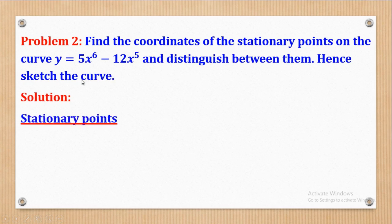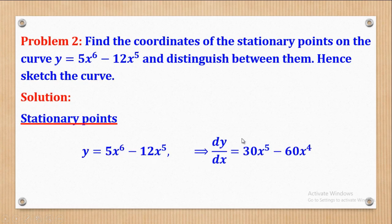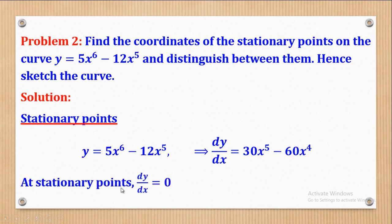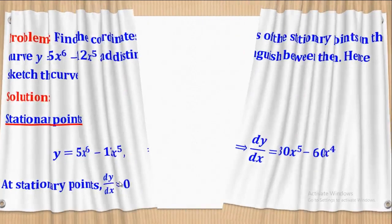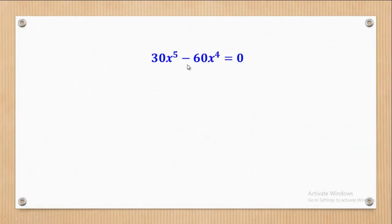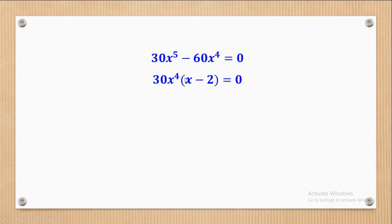We start with the stationary points. To find them, get the first derivative first. Differentiating 5x⁶ gives 30x⁵, and differentiating −12x⁵ gives −60x⁴. At stationary points, the first derivative equals 0, so equating to 0 and factorizing: 30x⁴ is common to both terms, leaving (x − 2) in the bracket.